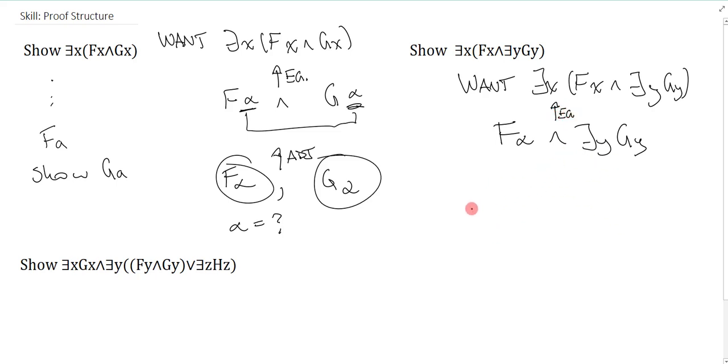Now how do I get this? Well we know that that's F alpha, and also I need exists y G y. And I could just go up this way using a conjunction, just like I demonstrated here.